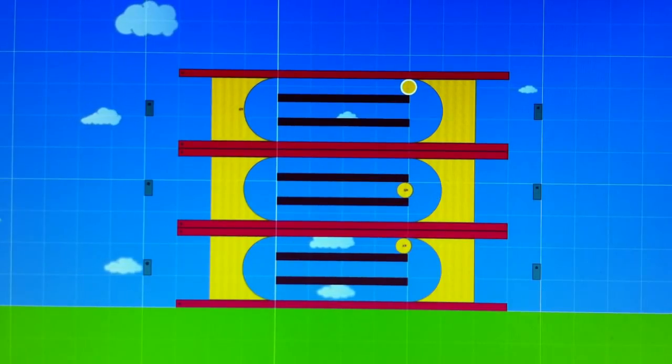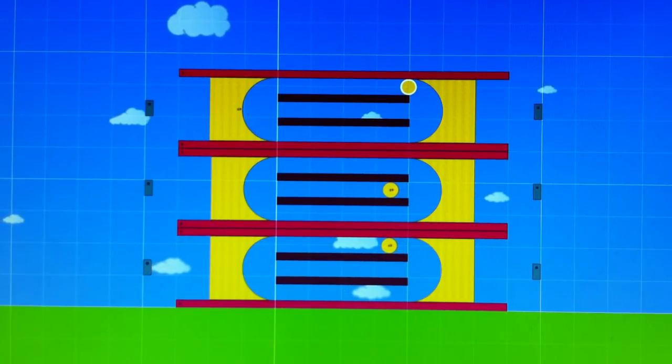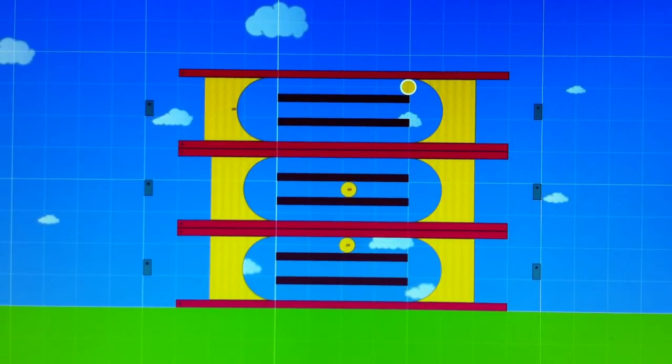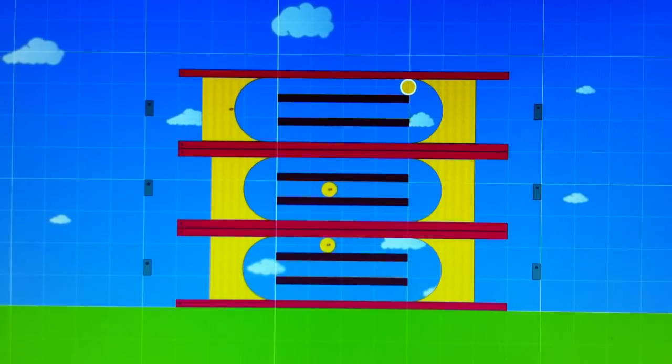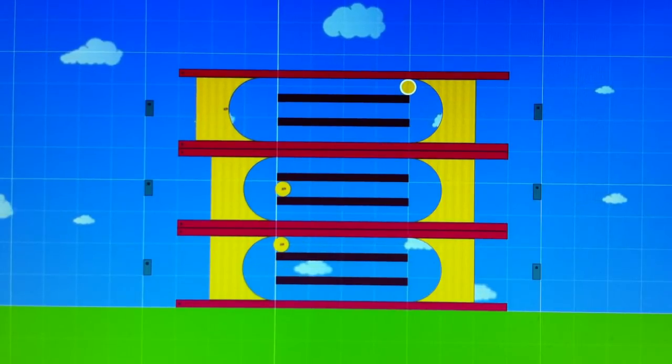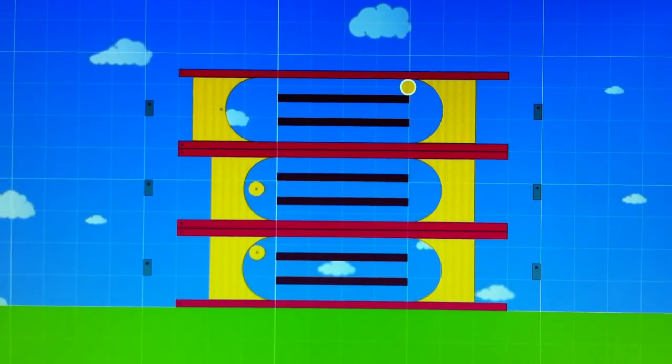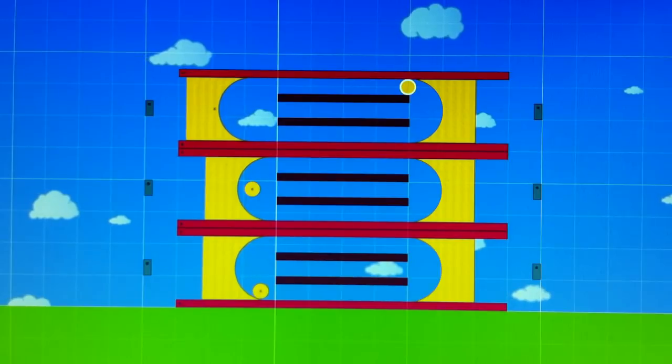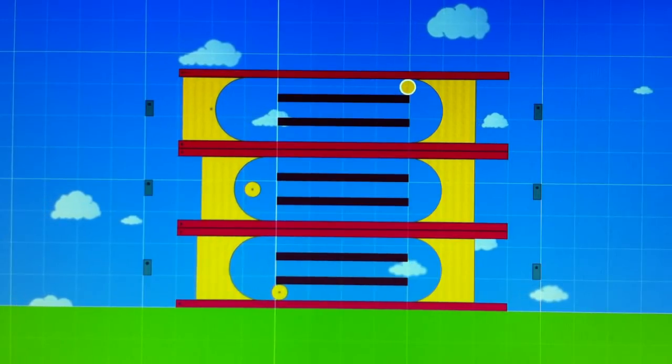Each level will receive the exact same amount of thrust over the same time period. The difference is that the top mass receives the thrust directly. The middle unit will receive the thrust from a head-on collision with the ball. And the bottom, the thrust is applied to the ball but it takes it through a centrifugal action.